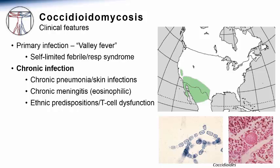Interestingly, there are certain ethnic groups that are at an increased risk of developing the complications of chronic infections. The reasons why are not known, but patients from Southeast Asia, the Philippines, or patients of African descent have a much increased risk of chronic infections due to Coccidioides compared to other populations. Also, patients who have T-cell dysfunction, especially patients with late-stage AIDS or transplant patients being treated with immunosuppression, are also at a highly increased risk of the chronic manifestations of coccidioidomycosis.